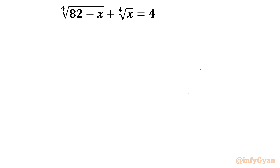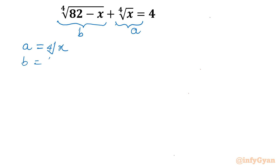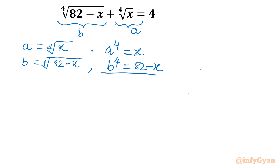Let me consider 4th root of x equal to a, and 4th root of (82 minus x) equal to b. So a equals 4th root of x and b equals 4th root of (82 minus x). I will raise both sides to power 4, so a⁴ equals x and b⁴ equals 82 minus x. Adding both equations gives us a⁴ plus b⁴ equal to 82.